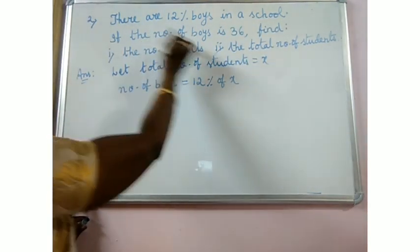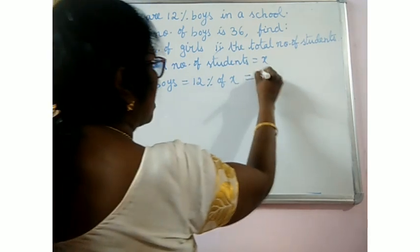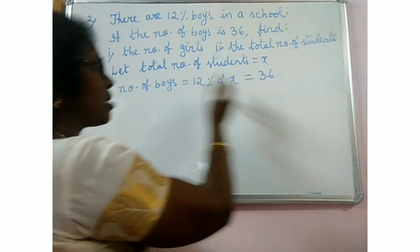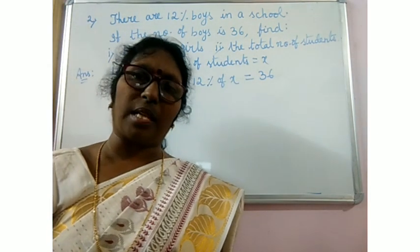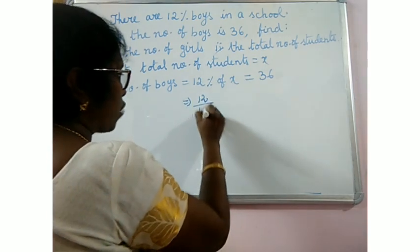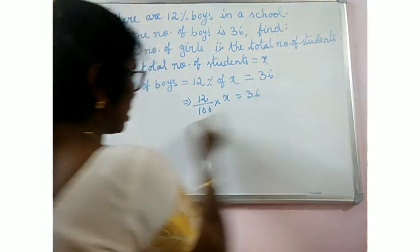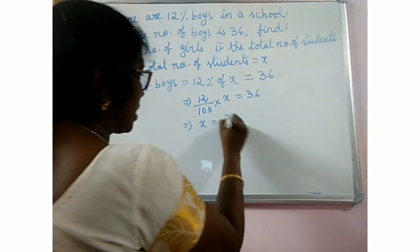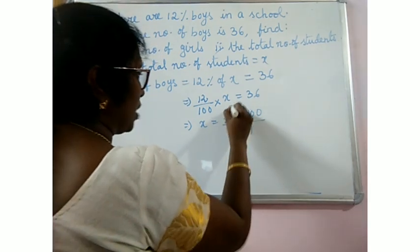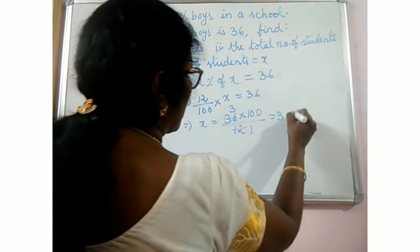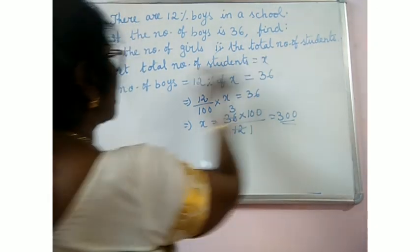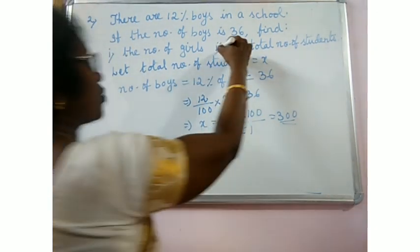It is given that if the number of boys is 36, that means 12% of total number of students is 36. Let us simplify this: 12 by 100 into x is 36, or x is equal to 36 into 100 by 12, which equals 300. So total number of students is 300.